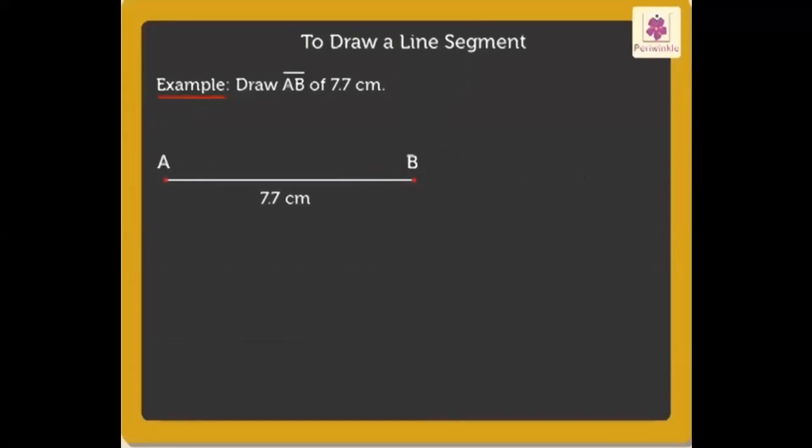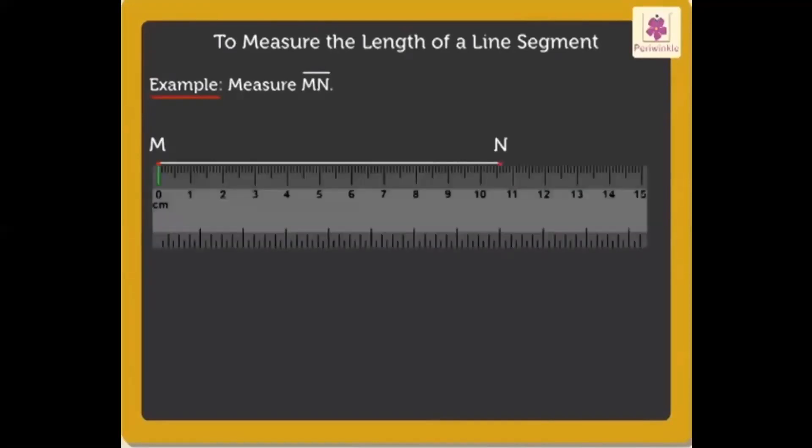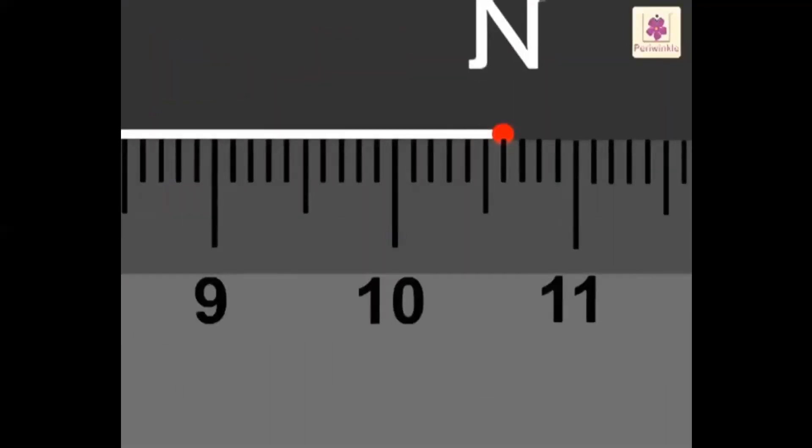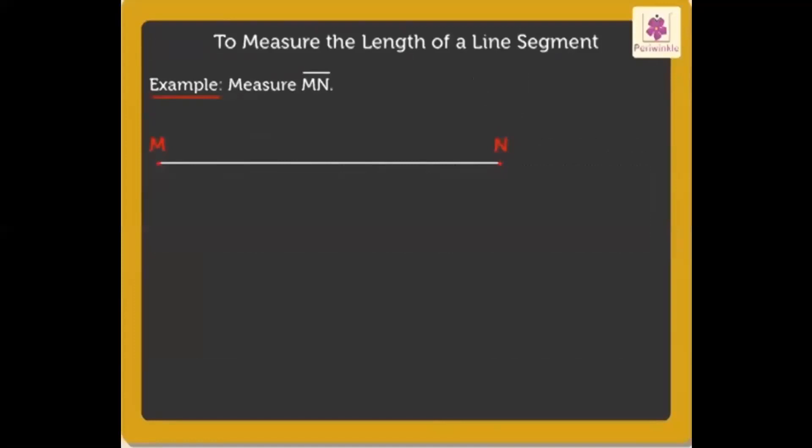After learning about how to draw line segments, let us now focus on how we measure the lengths of line segments. Let's measure the length of segment MN. Keep zero of the ruler at point M. We count forward from zero to fifteen. Look, point N of the segment coincides with the sixth division after ten centimeters on the ruler. Thus, we say that segment MN is 10.6 centimeters long. We read it as length of segment MN is equal to 10.6 centimeters.